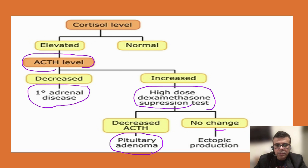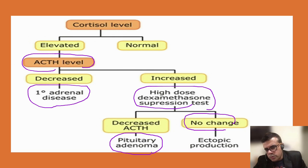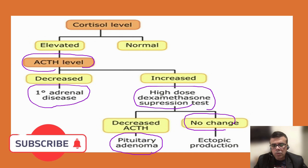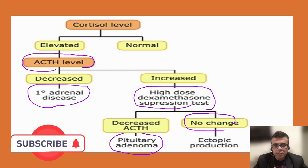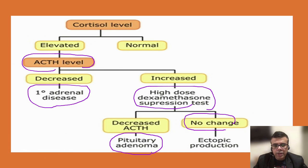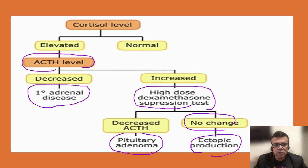In cases of ectopic ACTH production or paraneoplastic syndrome — from small cell carcinoma, bronchial carcinoid, or renal cell carcinoma — the high-dose dexamethasone suppression test will show no change in ACTH or cortisol levels. This is because the dexamethasone can inhibit pituitary ACTH but has no effect on the autonomous ACTH secreted by the tumor cells.